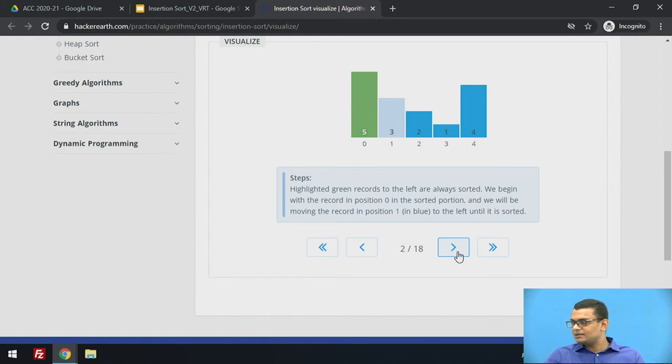The green highlighted values are the values which are considered to be sorted. Now let us scan the rest of the array.